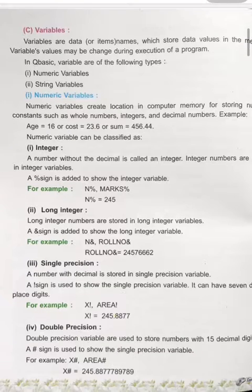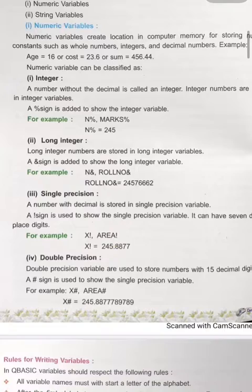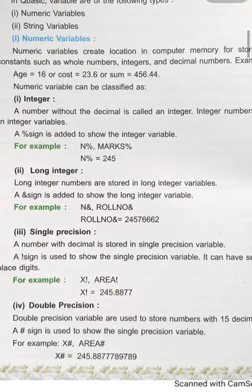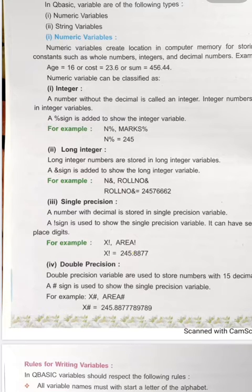For example, a numeric variable: age = 16, cost = 23. Numeric variables define integer, long integer, single precision, and double precision. Integers are whole numbers, also known as 'n marks' — when declaring, we use the percentage symbol (%). We will explain this further when we do practical programs.